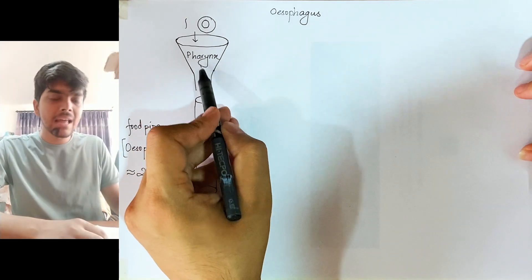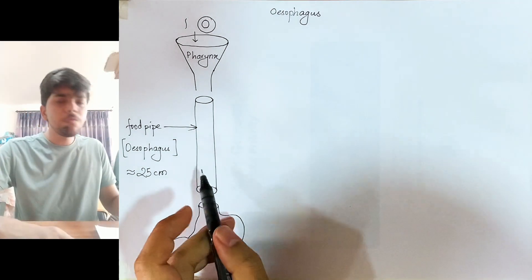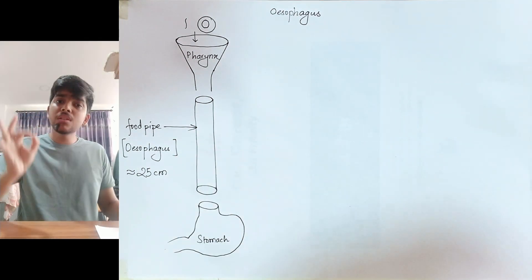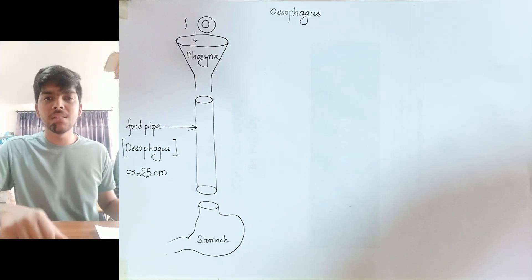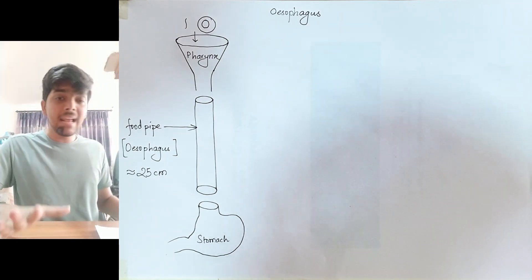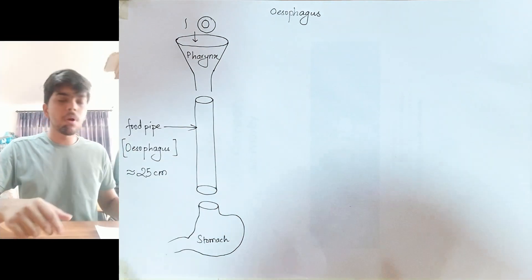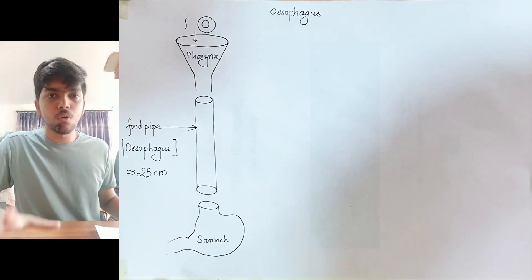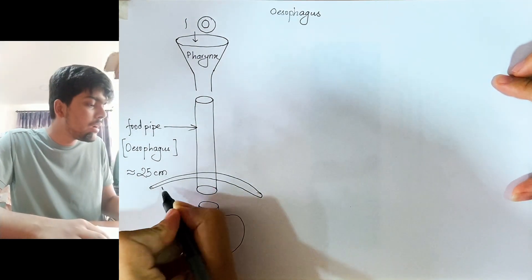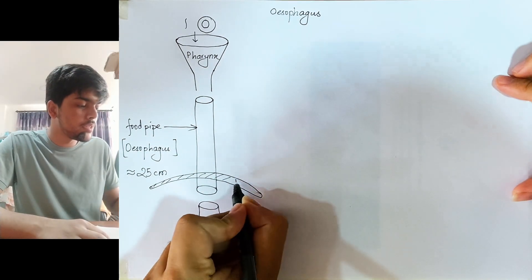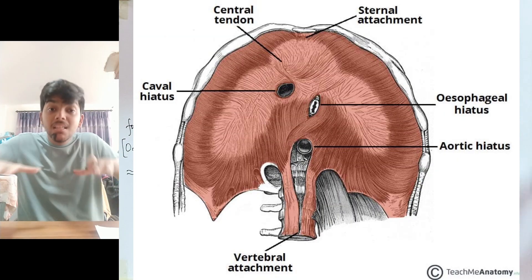The esophagus passes through a structure called the diaphragm on its way to the stomach. The diaphragm is part of the respiratory system. You can see the diaphragm in the diagram. The esophagus passes through an opening in the diaphragm called the esophageal hiatus.